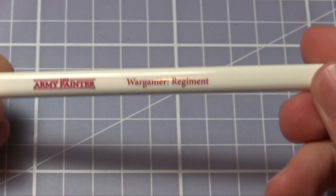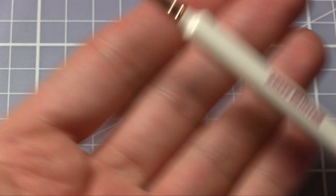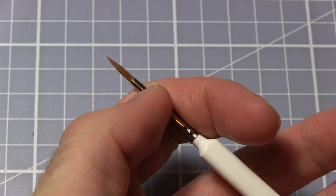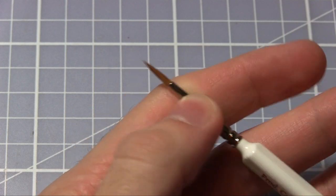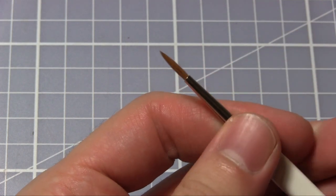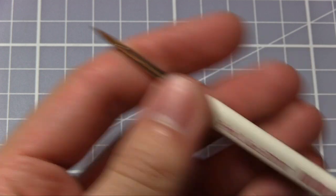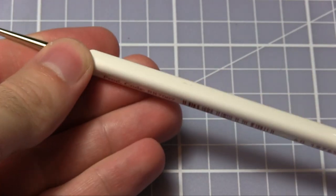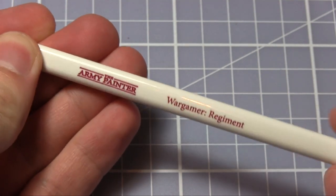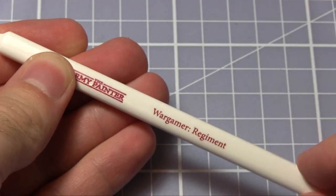Here we have the Wargamer Regiment Brush, which is the general all-around workhorse of your paintbrush collection. It's large enough to cover areas such as shields and armor plates pretty quickly, but still retains a nice point to get into hard-to-reach places without over-spilling onto other areas. If you combine this paintbrush with the monster brush, you can probably just paint Space Marines with just these two.